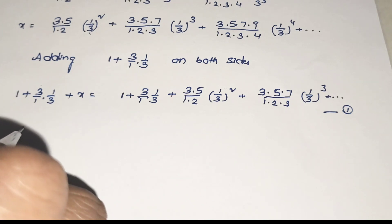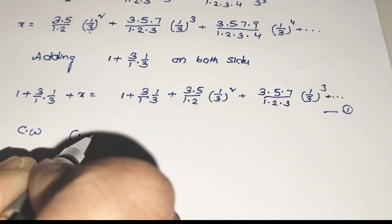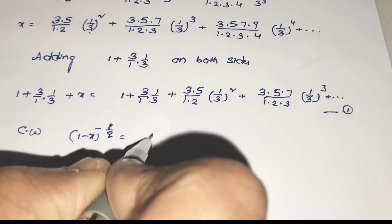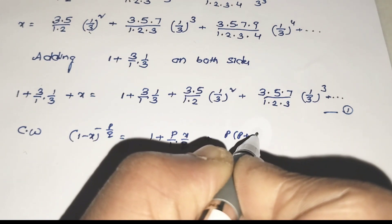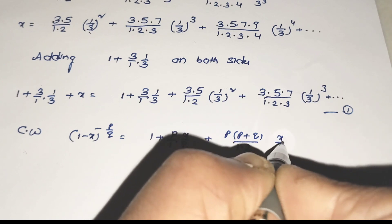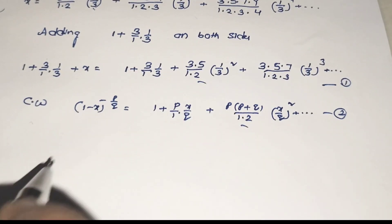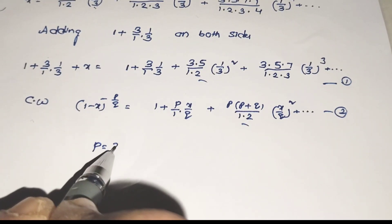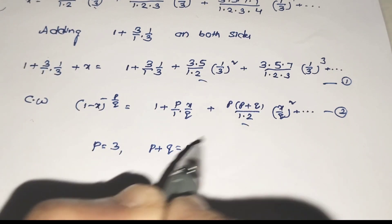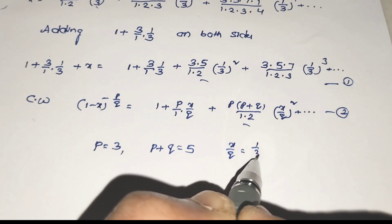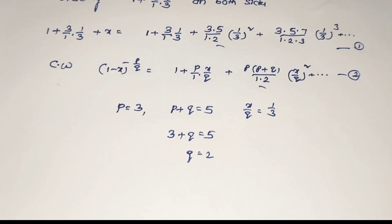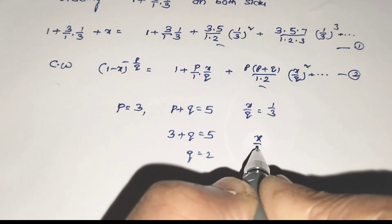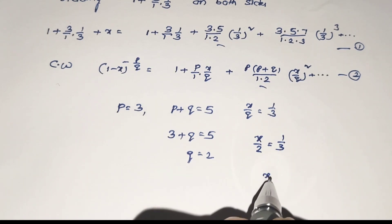Now taking comparison: all terms are positive, so writing the formula as compared with (1−x)^(−p/q) = 1 + (p/1)×(x/q) + (p×(p+q))/(1×2)×(x/q)² and so on — this is equation 2. Doing the comparison: p = 3, p + q = 5, x/q = 1/3. Substituting p = 3: 3 + q = 5, so q = 2. Then x/2 = 1/3, so x = 2/3.